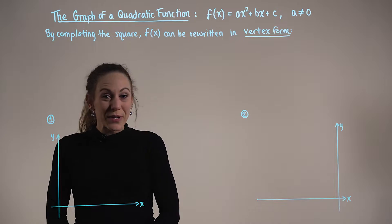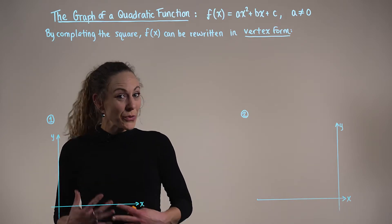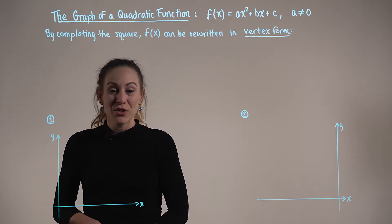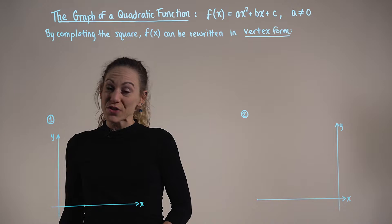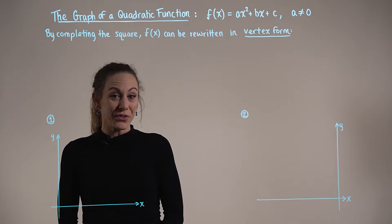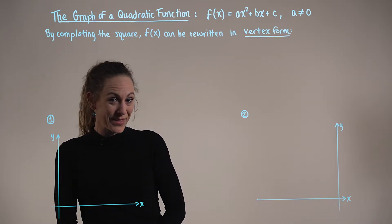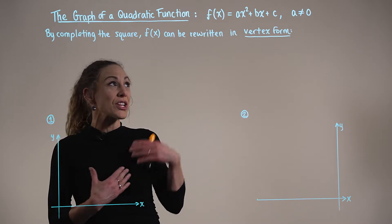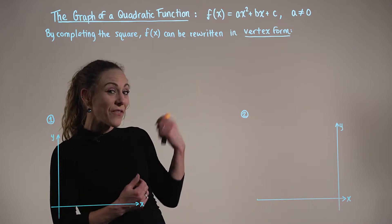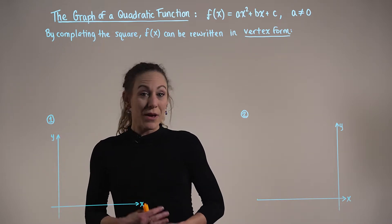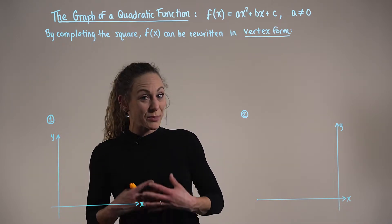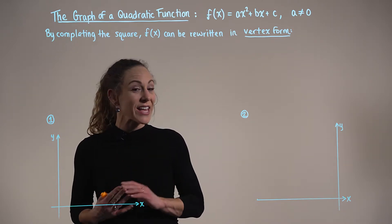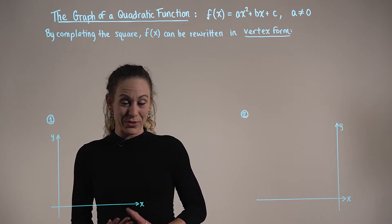We're now ready to explore a new type of function: quadratic functions. Quadratic functions are polynomial functions of degree two. In standard form, we define quadratic functions as f(x) = ax² + bx + c, where our leading coefficient a cannot be equal to zero.